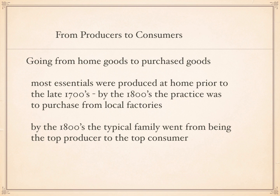Basically, what we see happening with the Industrial Revolution is that the typical family goes from being the chief producer to the chief consumer. Most essential products were produced at home prior to the late 1700s — people made everything they needed at home, or inherited it from parents. It was not uncommon to inherit your parents' kitchen utensils, spoons, or a pot. By the 1800s, the practice was to purchase from local factories and merchants who sold spoons, pots, barrels, wagon wheels, and so on. The typical family was now no longer the top producer — they were the top consumer.